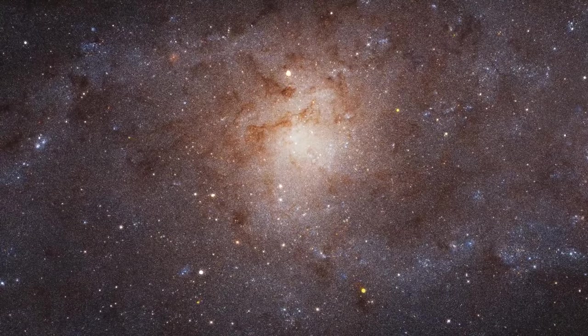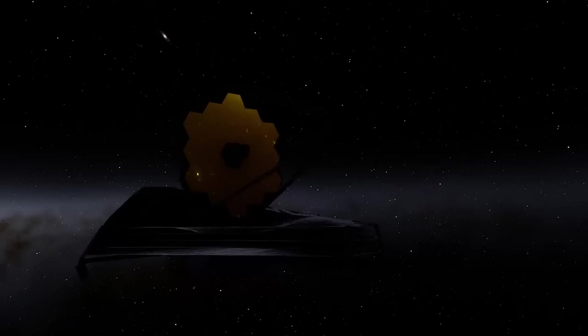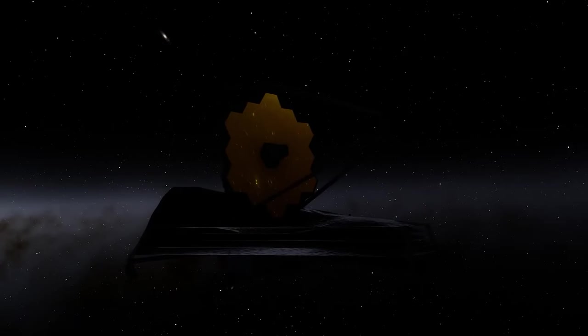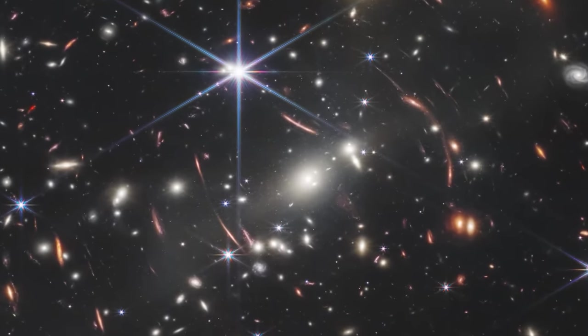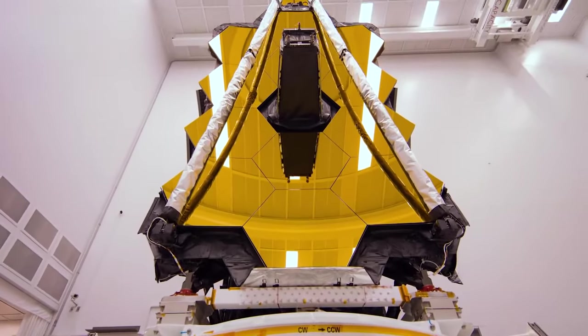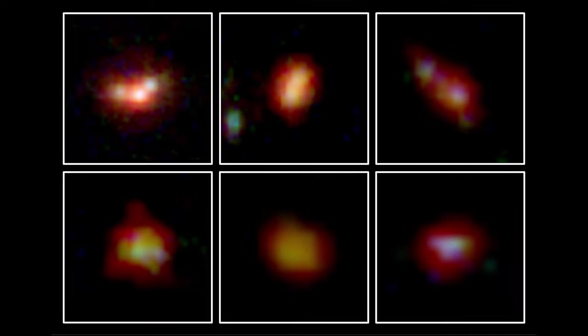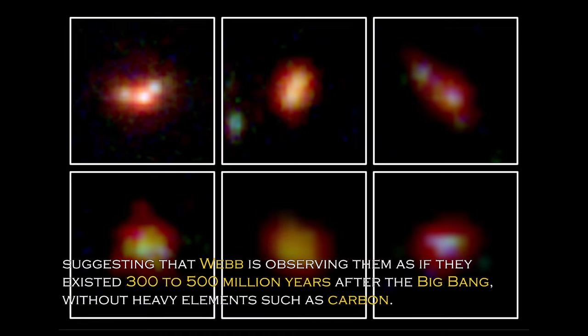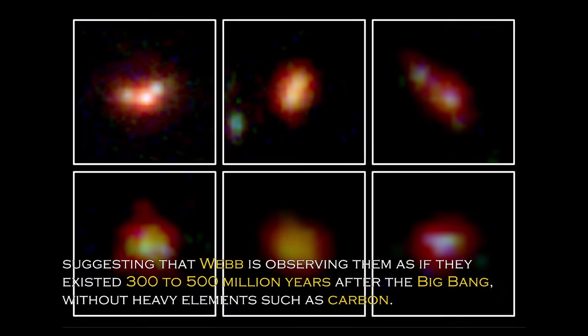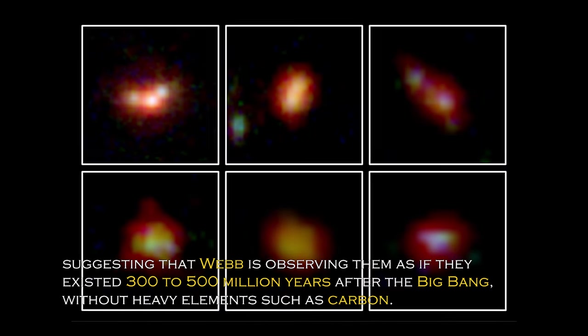This discovery has had a major impact on our understanding of the universe and has prompted NASA to develop even more powerful telescopes than the James Webb Space Telescope to confirm whether our understanding of the Big Bang is correct. Data obtained from Webb's spectrometer and near-infrared camera have revealed that four of the six primordial galaxies have extreme redshifts, suggesting that Webb is observing them as if they existed 300 to 500 million years after the Big Bang, without heavy elements such as carbon.